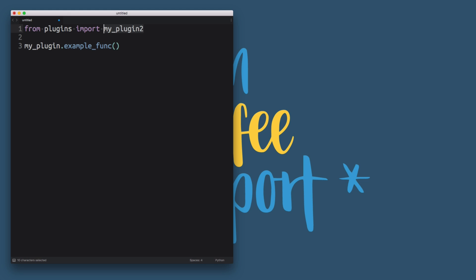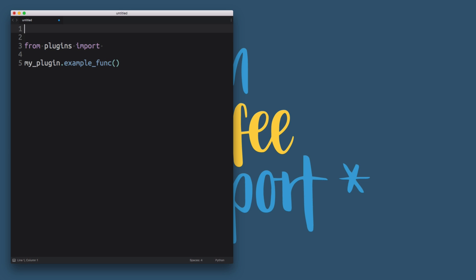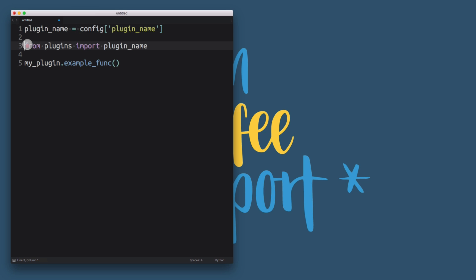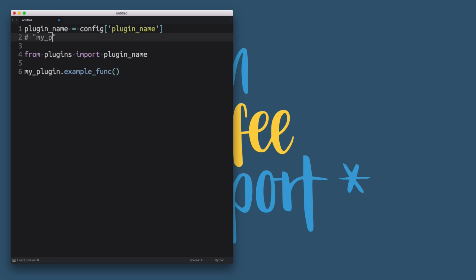So the question is: how do you modify this code so that instead of using the import keyword you can dynamically load a plugin specified in a config variable? This is pseudo code, but imagine we wanted to do something like 'import plugin_name' where plugin_name is a string like 'my_plugin' or 'plugin_2.0'. Running this code wouldn't work because it would always try to import the literal name 'plugin_name'.